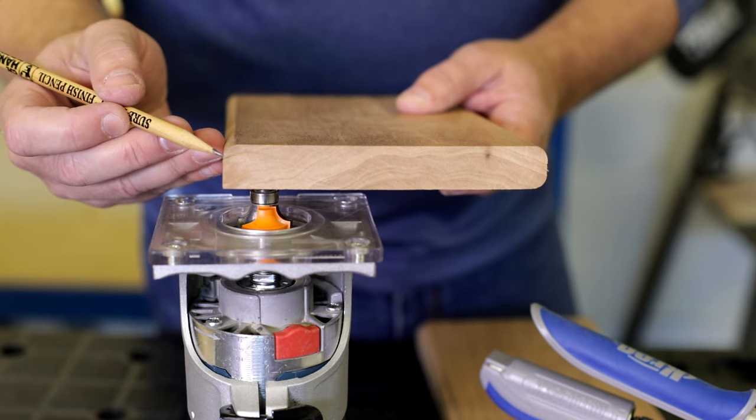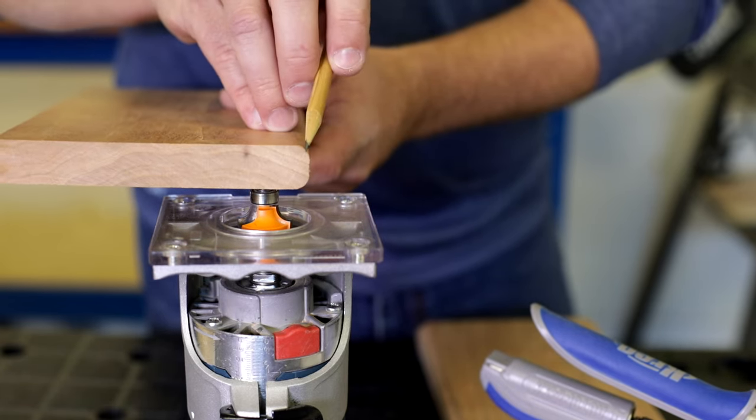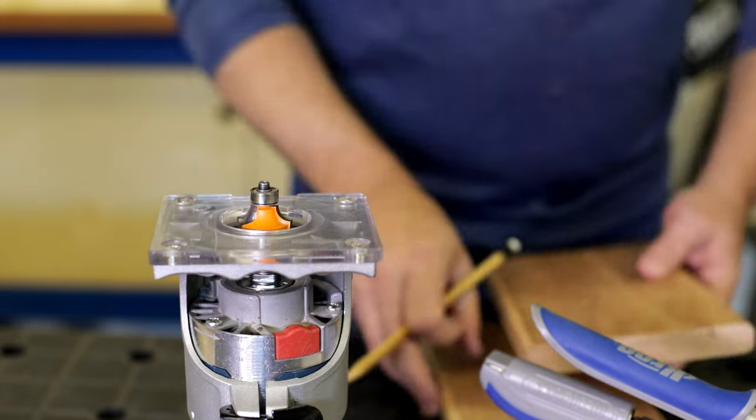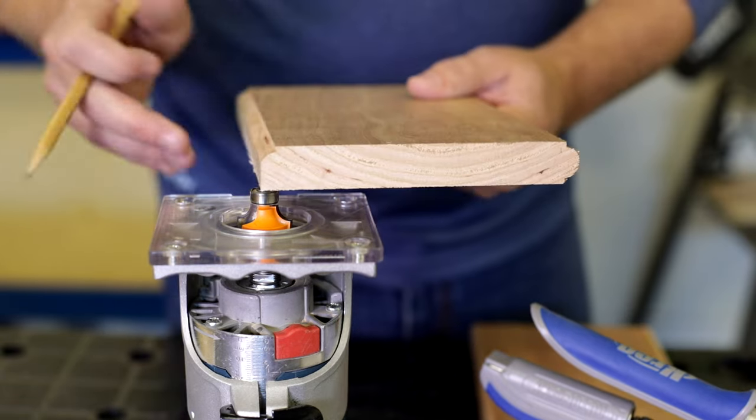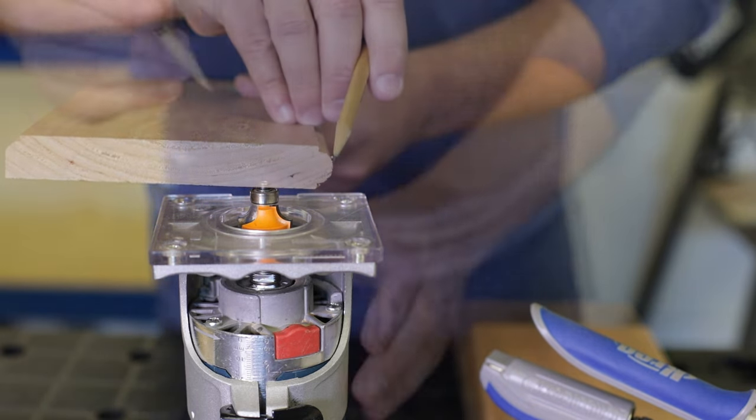With this one bit you can round over one edge or both of them to soften the look. The same bit will also make a fancier profile called a beaded round over which you can put on one edge or on both.